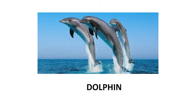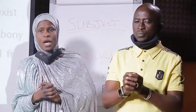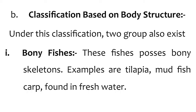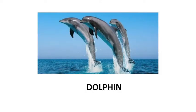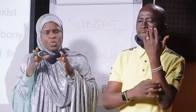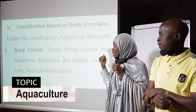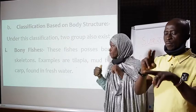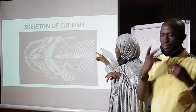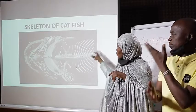The second classification is based on body structure, that is morphology. Under this classification, two groups also exist. The first is bony fishes — these possess bony skeletons. Examples are tilapia, mudfish, and carp fish, which are all found in fresh water. When you look at the skeleton of the fish, it is bony. As shown in the diagram of a catfish skeleton, the bones are clearly visible all over. Most bony fishes are freshwater fish.